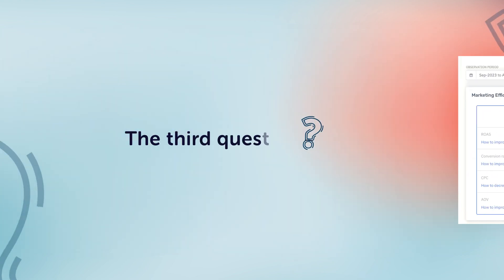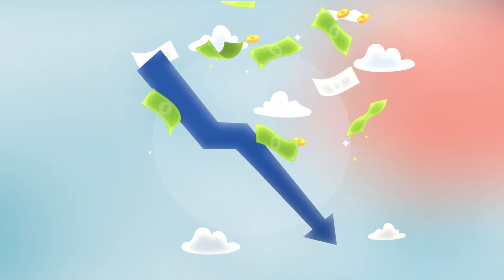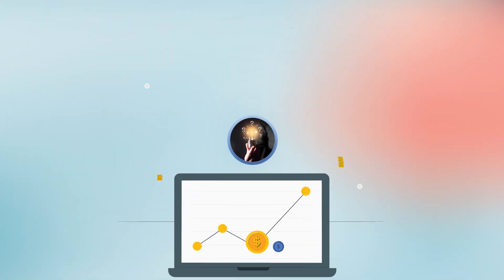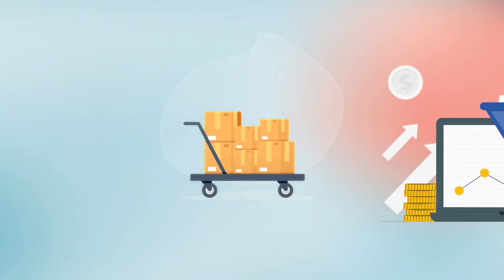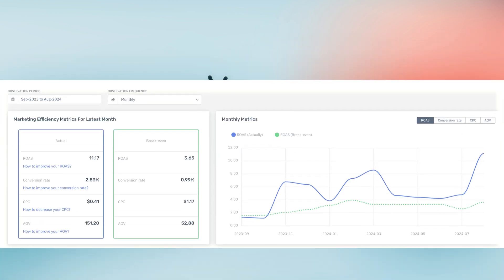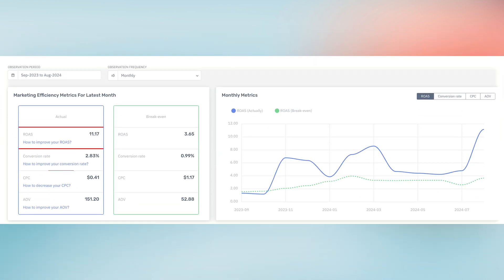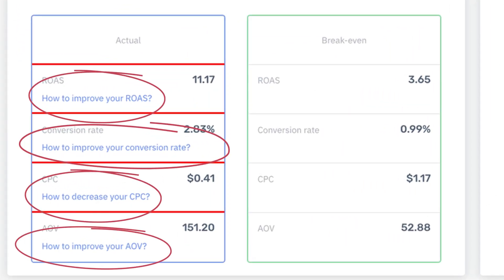The third question is: if my store isn't efficient enough, how can I improve it? Magnify Profit provides efficiency improvement suggestions to help you optimize your conversion rate, average order value, cost per click, and other important factors that impact your marketing efficiency and cost efficiency.